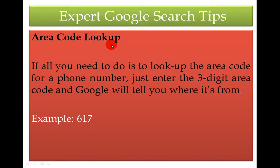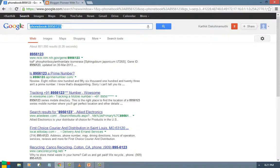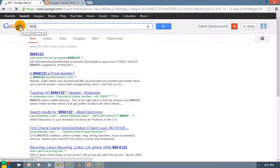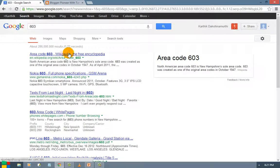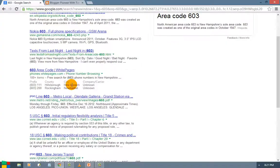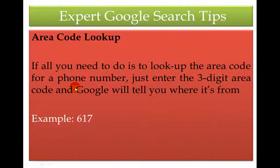Next is area code lookup. If all you need to do is look up the area code for a phone number, just enter the three-digit area code and Google will tell you where it is from. For example, enter 617 and it will tell you which region that area code belongs to. This is how you can find the location associated with an area code.